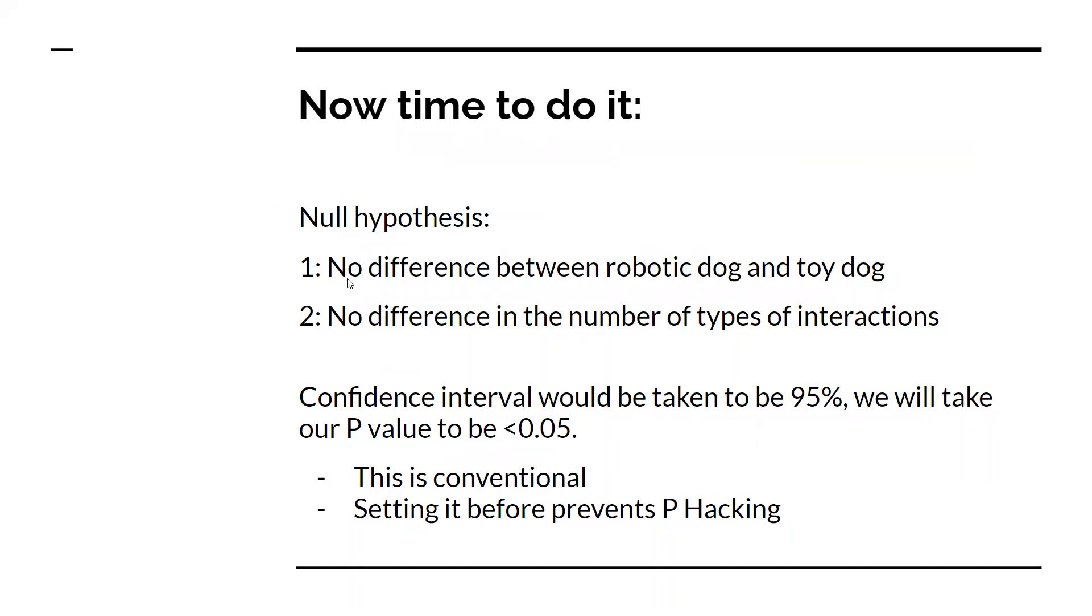I've stated my two null hypotheses. Looking at the first table, we say there's no difference between the robotic and the toy dog. The null means no difference. Same goes for the second point—no difference in the number of types of interactions. To prevent p-hacking, we set our confidence interval and p-value at less than 0.05, which is done by convention.